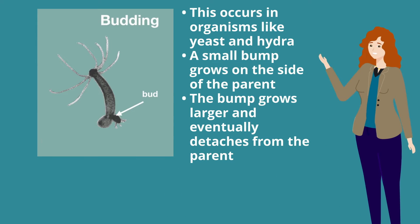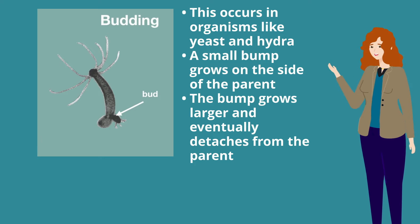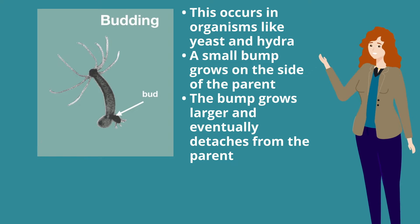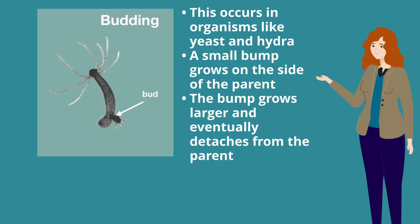In budding, that occurs in yeast and hydra. It's a small bump growing on the side of the parent. The bump grows larger and eventually detaches from the parent.